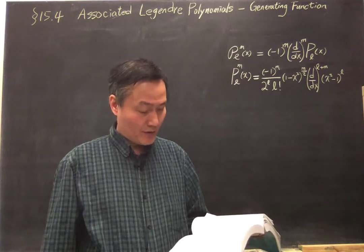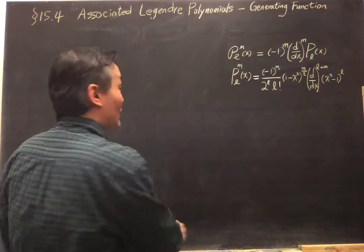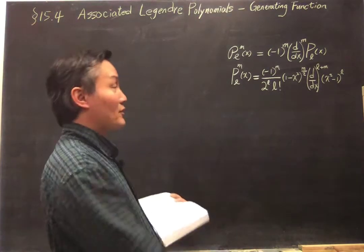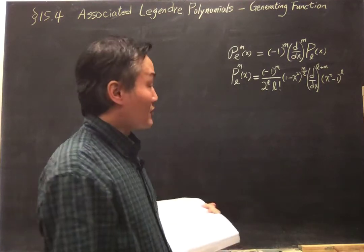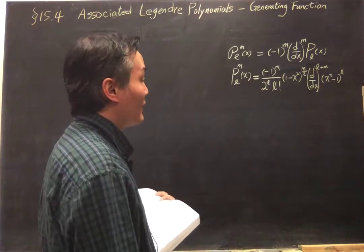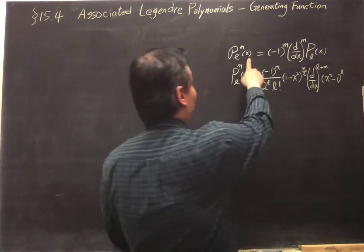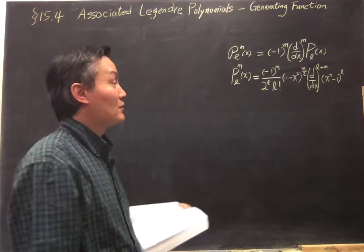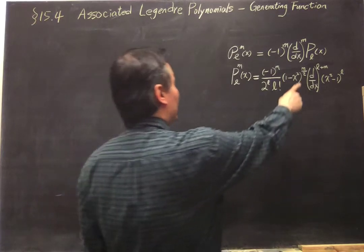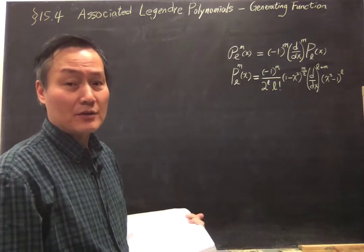We are in section 15.4. Before we go any further, we summarize what we have first. The associated Legendre equation can be solved by the associated Legendre function, which is this factor — (1 minus x squared) to the m/2 power — times the associated Legendre polynomial. We showed that can be written in a formula related to the Legendre polynomials, and this formula can be extended to negative m by using the Rodriguez formula for the Legendre polynomial.